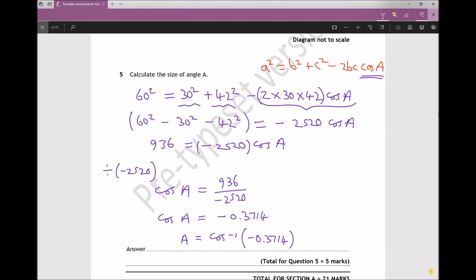Although I have this answer here to 4 decimal places, what I'm actually going to do is cos to the minus 1 of the full calculator answer just to avoid any rounding errors. Therefore, A equals cos to the minus 1 of answer, and I get an answer of 111.8 degrees.